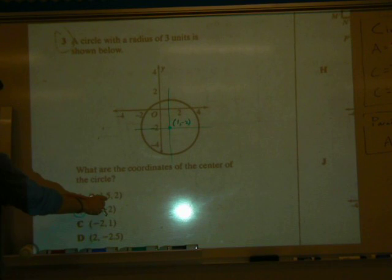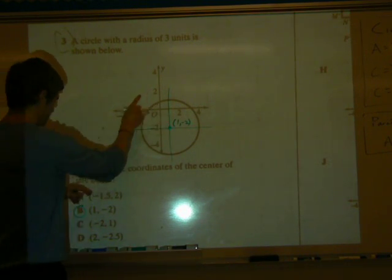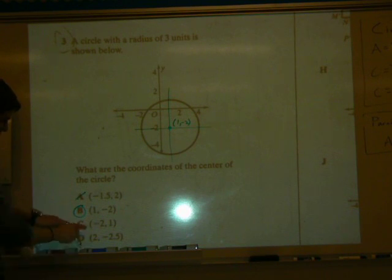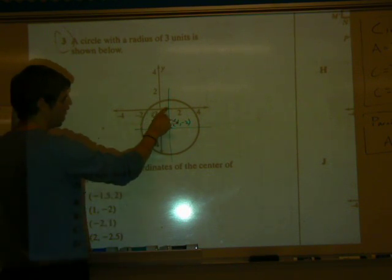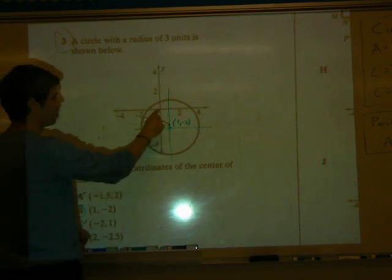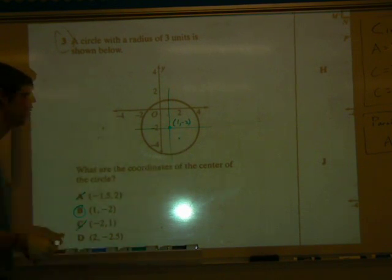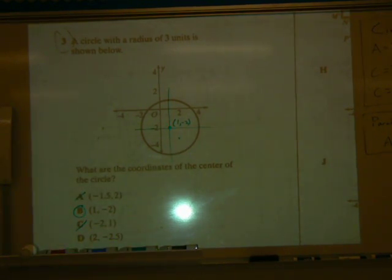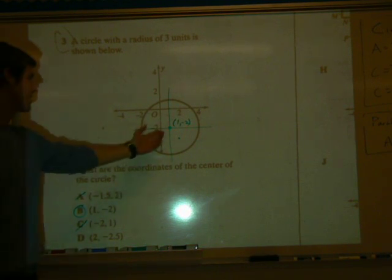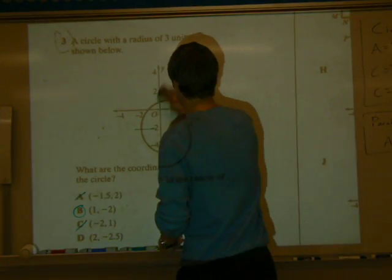Now, most of these don't even make sense. (-1.52). (-1.52) is up there. That's obviously not the circle, not the center. (-2, 1). (-2, 1) is there. That's obviously not it. (2, -2.5). (2, -2.5). Now, that is at least in the circle. But obviously, that's not the center of the circle, okay? So even though you don't have the lines, you can kind of make an educated guess and figure out the correct answer. And that's okay.